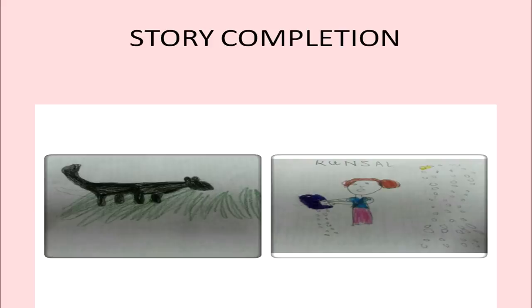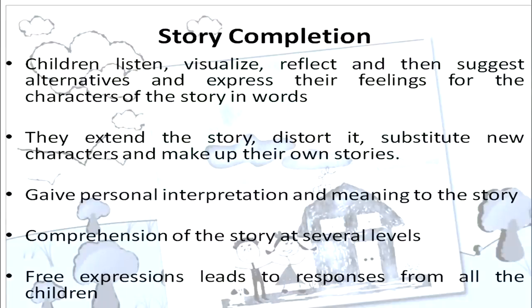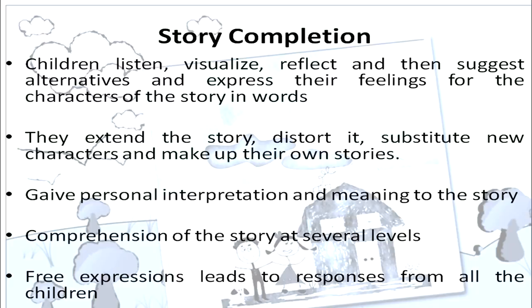Then, we can also narrate incomplete stories to children and ask them to complete these stories. Story completion is the next activity. Children listen, visualize, reflect, and then suggest alternatives and express their feelings for the characters of the story in words. For example, if we narrate a story to the children and do not complete it and we ask them to complete the whole story, every child can give a different version. In this, they may extend the story, distort it, substitute new characters, and maybe at times they can add new characters and make up their own stories.